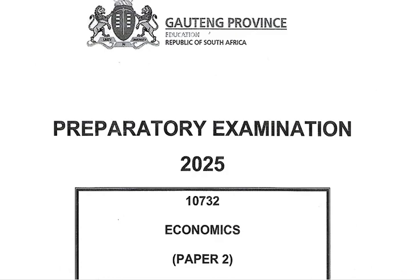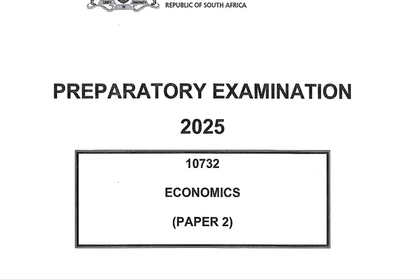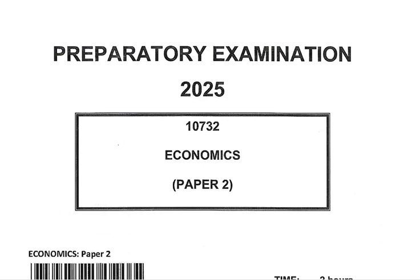Without wasting any time, today's lesson we'll be looking at the preparatory examination 2025, Economics Paper 2. We need to keep in mind that we've got two main topics which are microeconomics and contemporary economic issues. In this case, we'll be looking at Section A specifically.